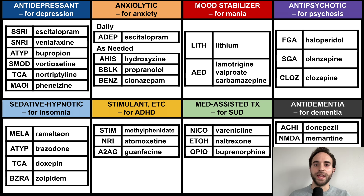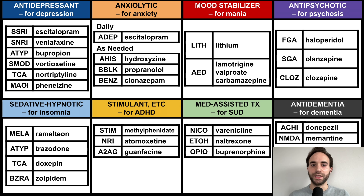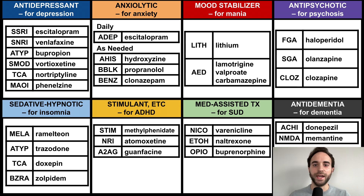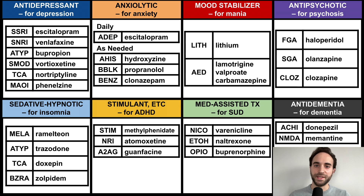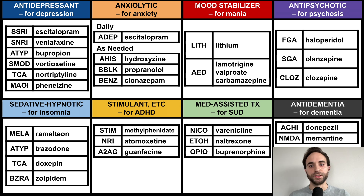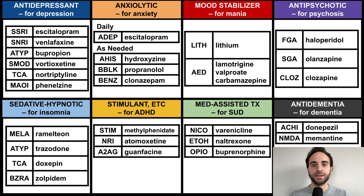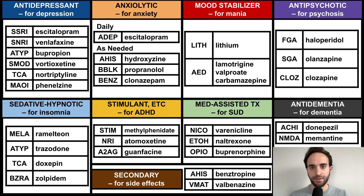Last are the anti-dementia medications, including acetylcholinesterase inhibitors and NMDA antagonists. These are the major classes of psychiatric medications, but there is one more type that psychiatrists should be familiar with, which I call secondaries.